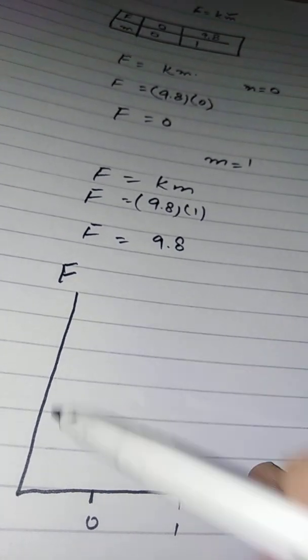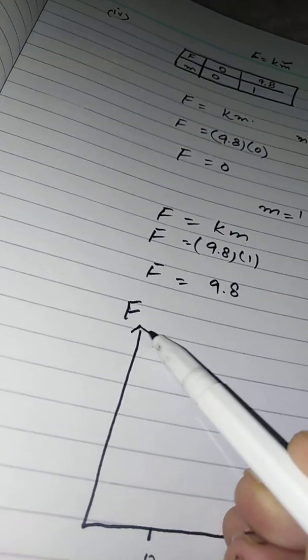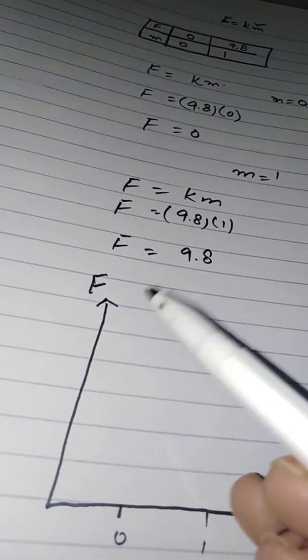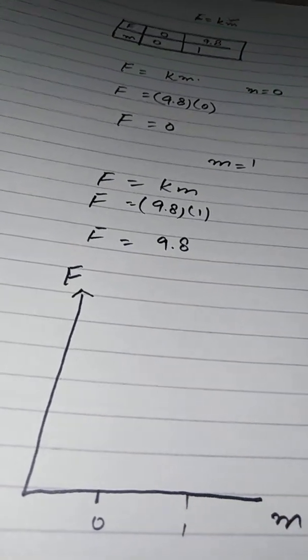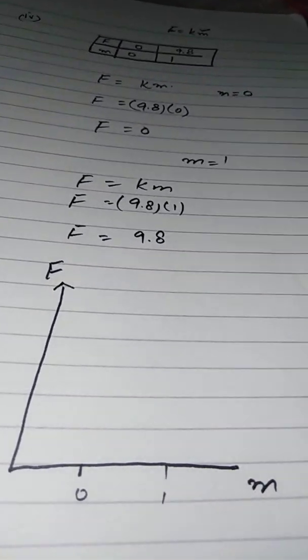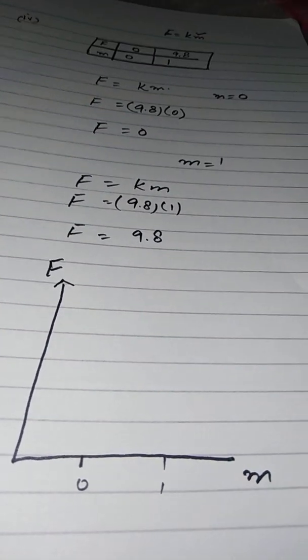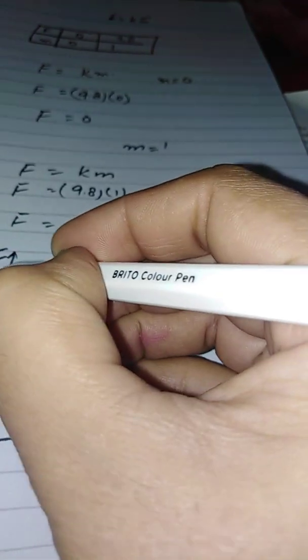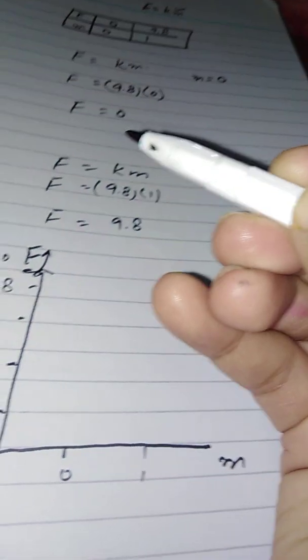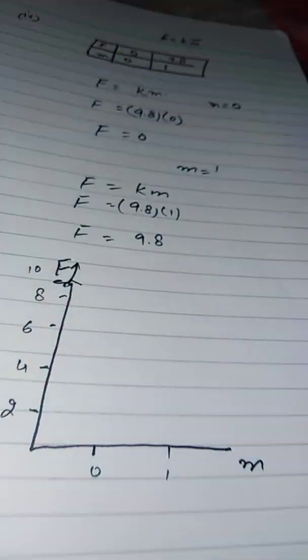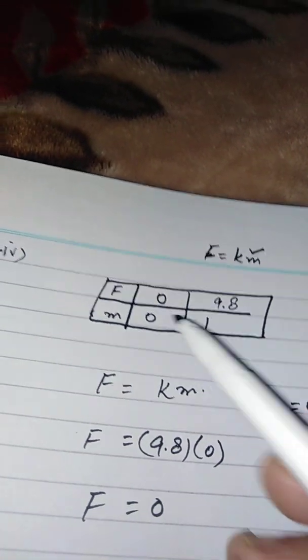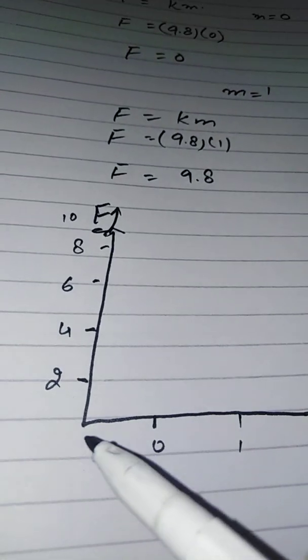You can take a scale of 2 units or 3 units on the y-axis for force. I am going to take a scale of 2 units on the y-axis, so I will write 2, 4, 6, 8, 10 and extend this further. From the table, when both F and M are 0, the point is at the origin.